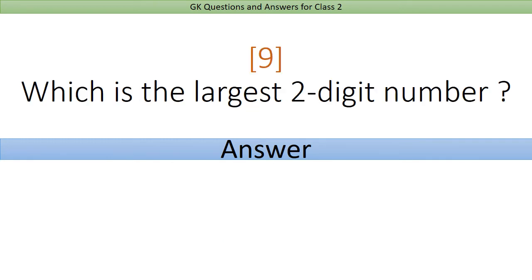Which is the largest two-digit number? Answer: 99.